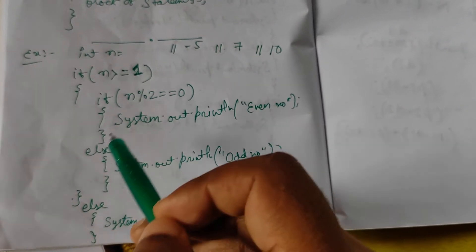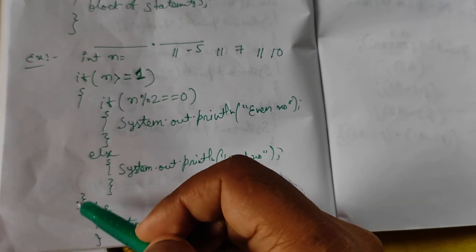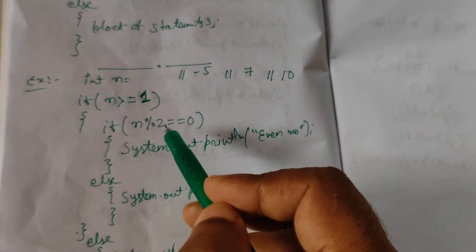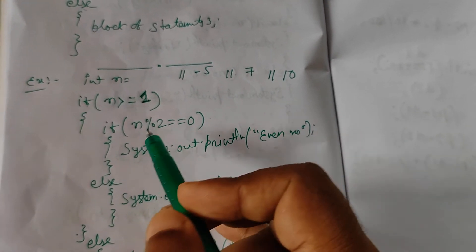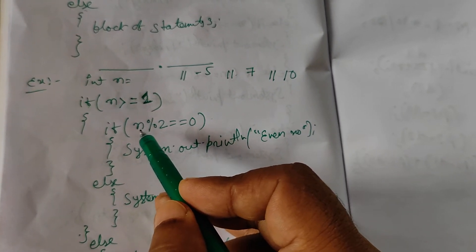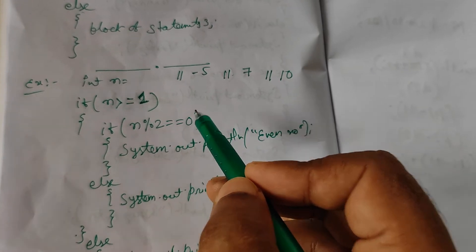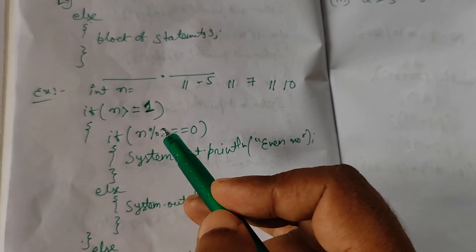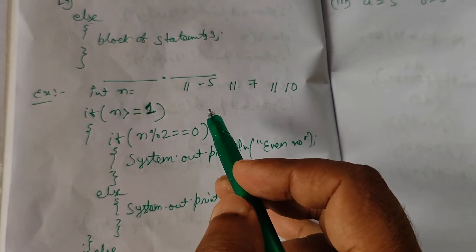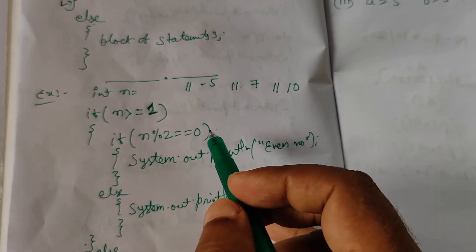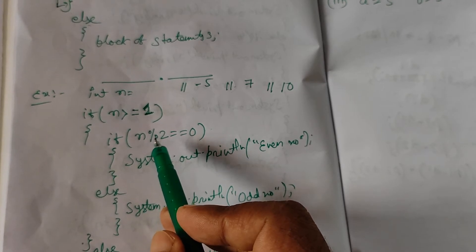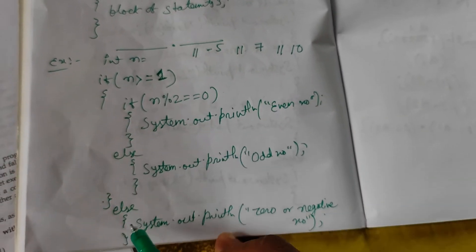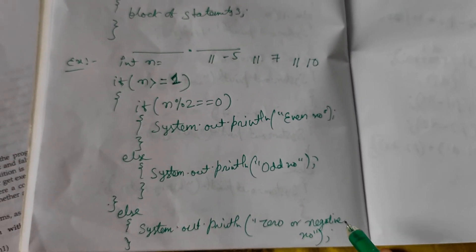Example of nested ifs: if n >= 1, enter the body and check if n % 2 == 0. If true, print 'even number' — because dividing by 2 gives remainder 0. Otherwise it's odd, because the remainder will be 1. If n is not >= 1, go to else and print 'zero or negative number'. So if n = -5, condition is false — prints 'zero or negative number'.